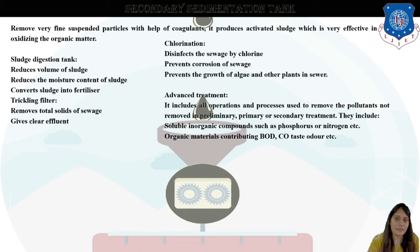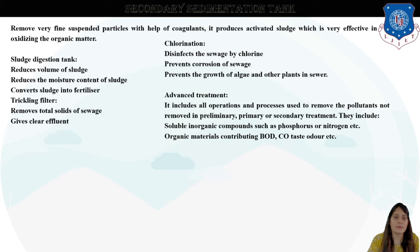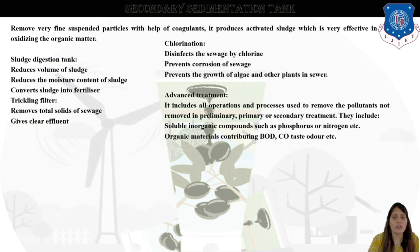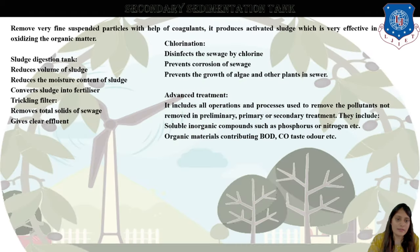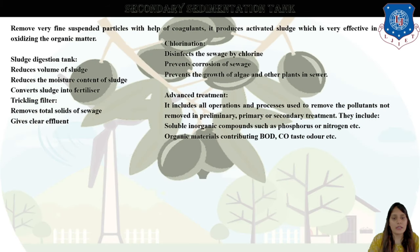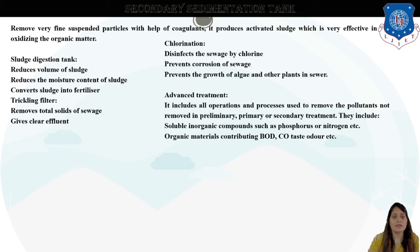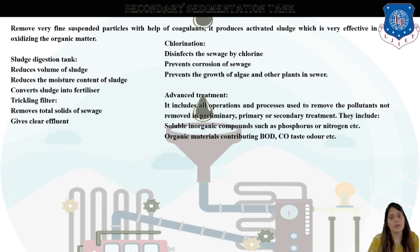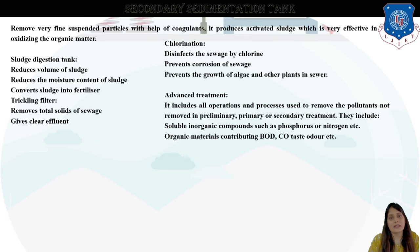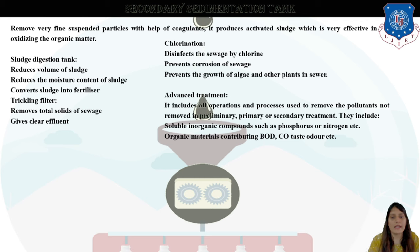The chlorination process is basically a disinfectant process. The advanced treatment includes all operations to remove pollutants not removed in primary and secondary treatment — soluble inorganic compounds, organic compounds, BOD, COD, taste, odors, etc. These are the secondary sedimentation tanks and the processes of chlorination and advanced treatment.